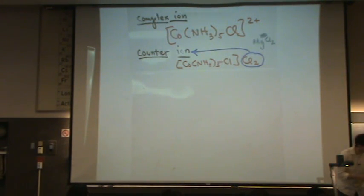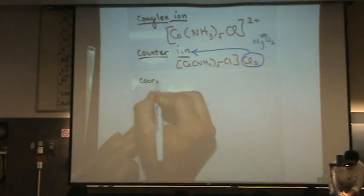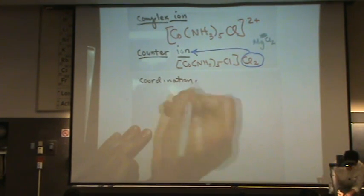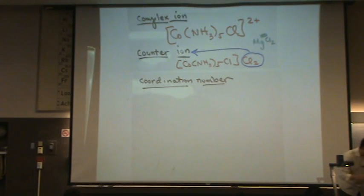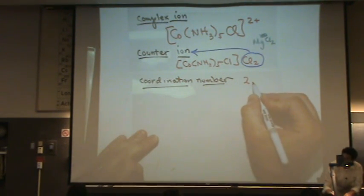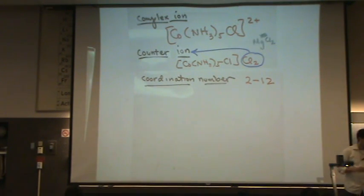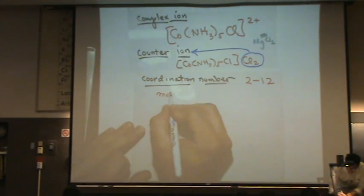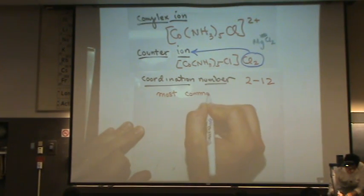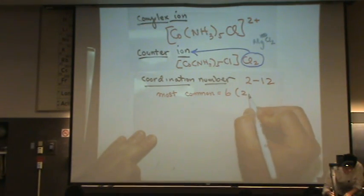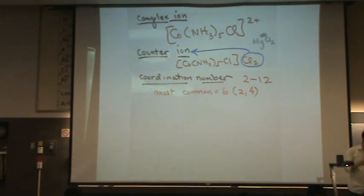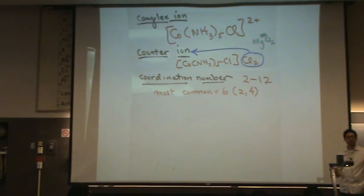Next: coordination number — you actually learned this in Chem 2B. Coordination number is a counting number that varies from 2 to 12. The most common is 6, but 2 and 4 are also common. Technically, it's the number of nearest neighbors to the transition metal.